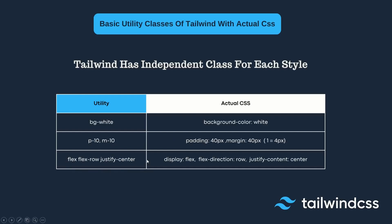Similarly, the 'flex' utility sets 'display: flex'. The 'flex-row' class sets 'flex-direction: row'. And 'justify-center' sets 'justify-content: center'. These are the basic utility classes of Tailwind CSS and how they compare to the actual CSS being applied under the hood.